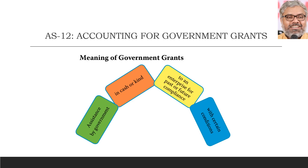There is no rule that without conditions, a government grant is not a government grant. Government, in general, keeps conditions. Otherwise, people might utilize those grants in a manner which the government does not intend. So government grant generally means assistance of the government to an organization for past or future compliance, whether given in cash or kind, with certain conditions.